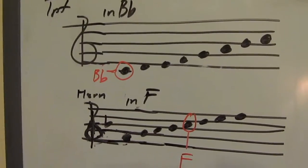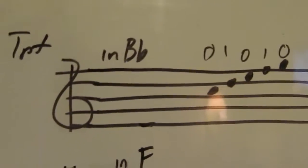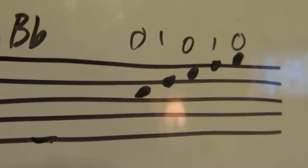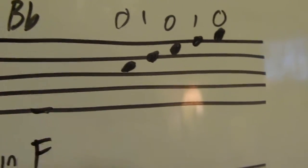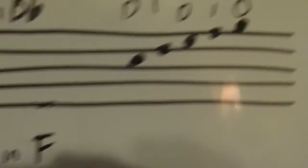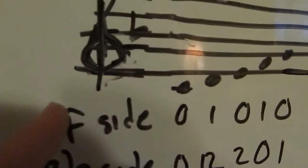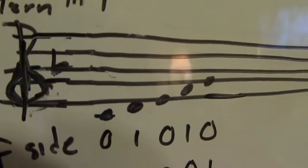Now, for the fingerings, as you can see here, this is the Bb staff. And those fingerings are for those notes. As you can see, C D F G - 0 1 0 1 0. It's pretty much the same thing for the horn part. Of course, in the F side, 0 1 0 1 0. C D F G - 0 1 0 1 0.